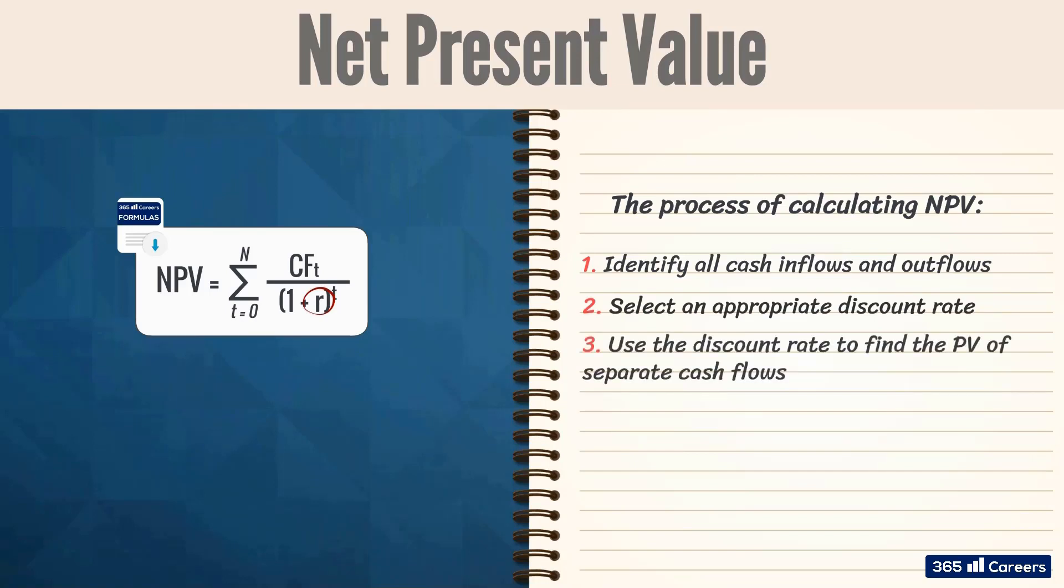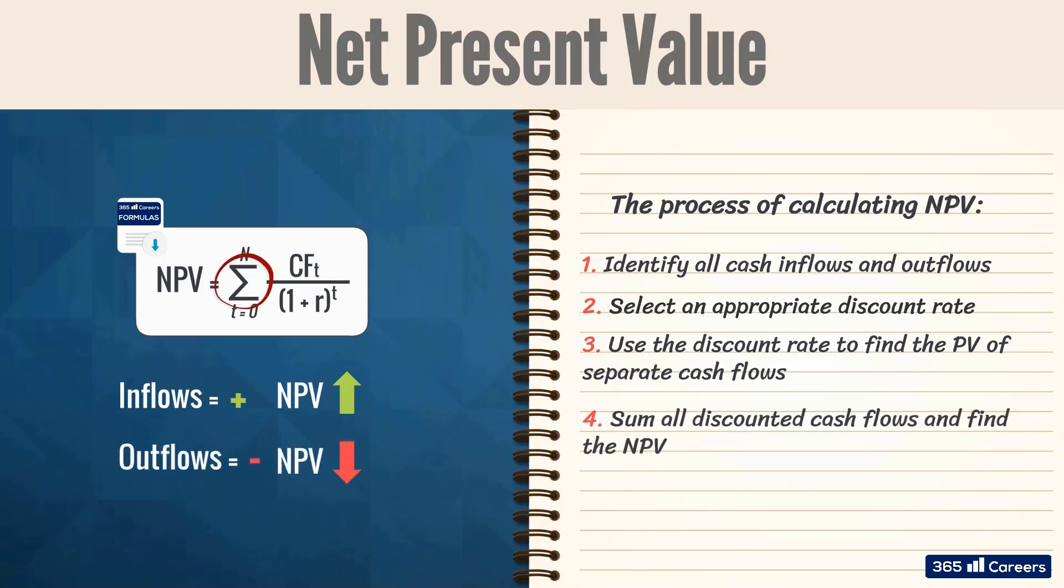Third, we use the discount rate to find the present value of each cash flow. Inflows are positive and increase NPV, while outflows are negative and decrease NPV. In the end, we sum all discounted cash flows and find the net present value of the investment.